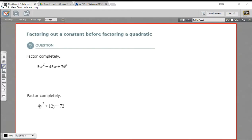In this case, each of these terms is divisible by 5, so I can factor out a 5. Let's take a 5 and put it outside of our parentheses, and then let's divide each term by 5.